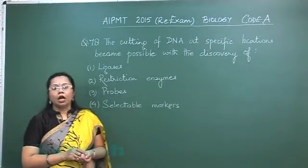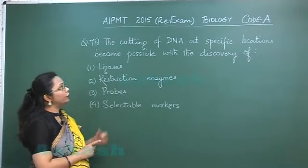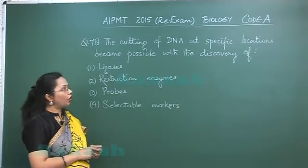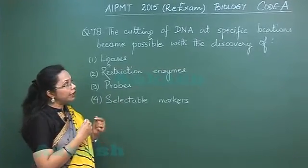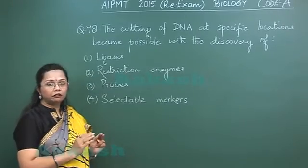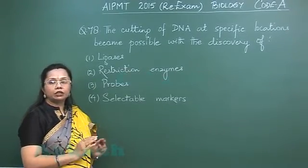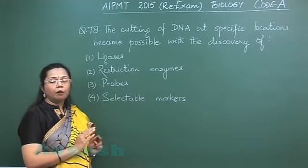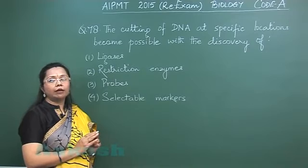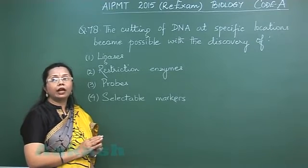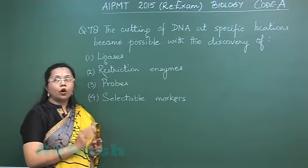Question 78: The cutting of DNA at specific locations became possible with the discovery of certain enzymes. DNA can be cut at specific locations by enzymes discovered from bacteria by Arbor Smith and Nathans. These enzymes have been named restriction endonucleases, or restriction enzymes.